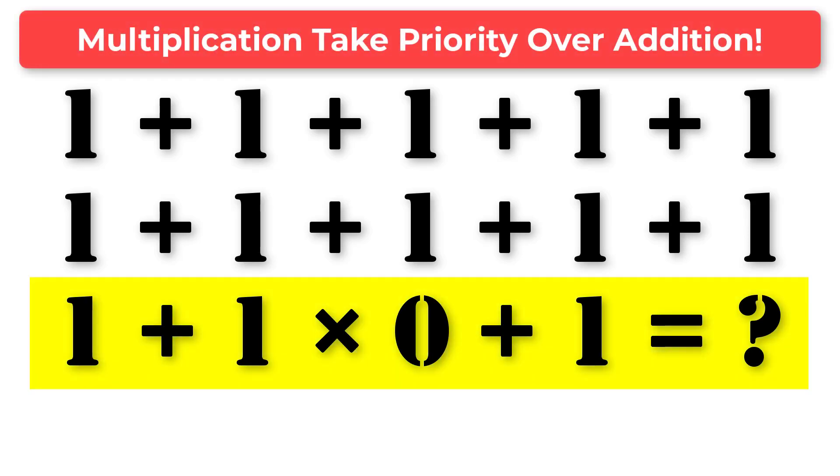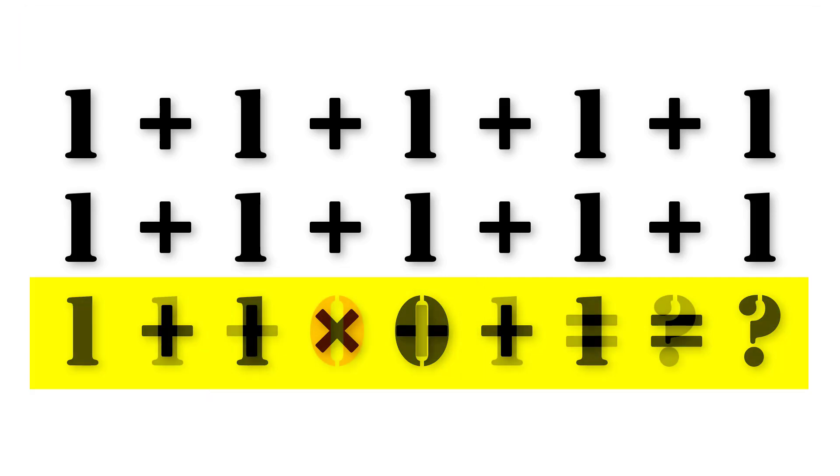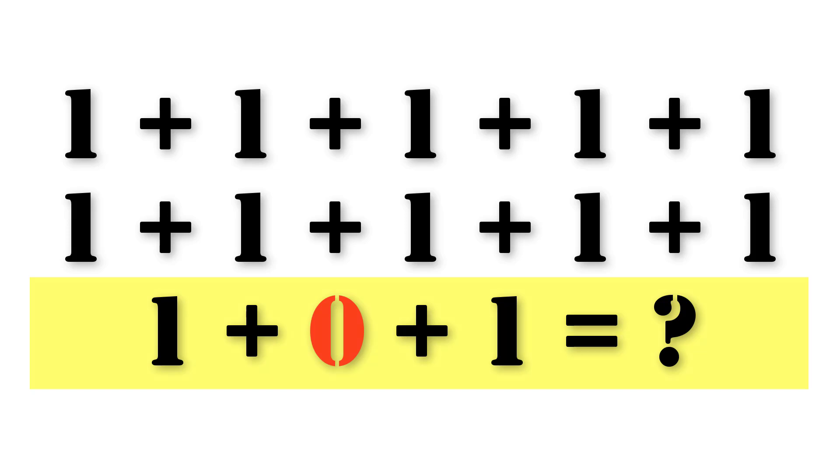In the third line, you see the multiplication symbol, so you need to multiply 1 and 0 before anything else. 1 times 0 is 0, so let's get that out of the way.